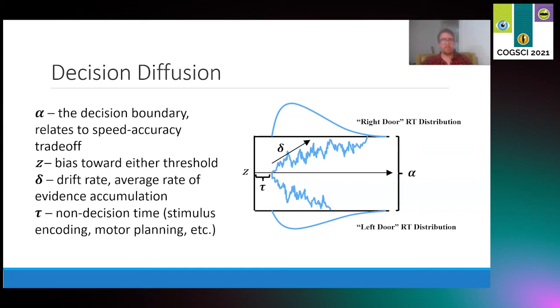Here, Z is the initial bias towards either of these two boundaries. Delta is the drift rate or the average rate of evidence accumulation. This is the general trajectory of the noisy random walk that is evidence accumulation. And lastly, tau is the non-decision time. This is typically anything non-cognitive that is not related to processes of evidence accumulation, for example, stimulus encoding. All of these processes together provide an explanatory model of decision response time.